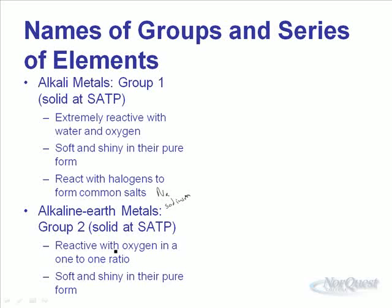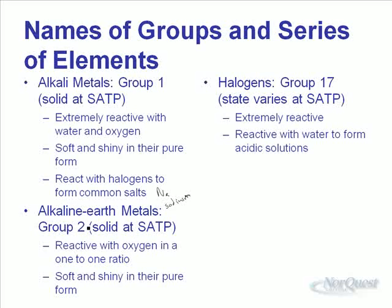Group 2 elements — the alkaline earth metals — are similar in chemical properties to the alkali metals. They're very reactive with oxygen in a 1-to-1 ratio, and are also soft and shiny in their pure form. Most of these metals aren't seen in their pure form because as soon as they're exposed to air, they react with oxygen to become a compound.